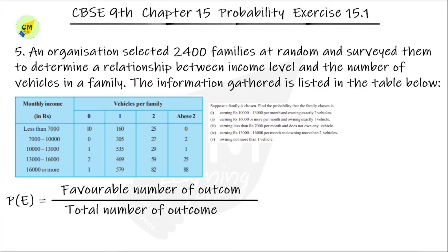Second subdivision: earning 16,000 rupees or more per month and owning exactly one vehicle. Looking at that column, the value satisfied is 579. So the answer for the second subdivision is 579 divided by 2400.